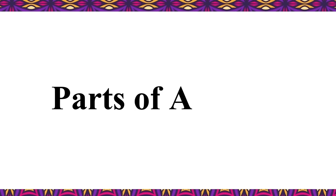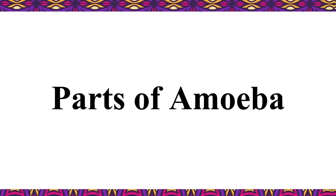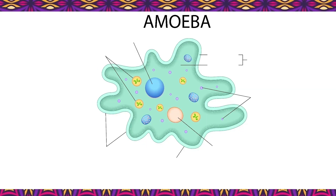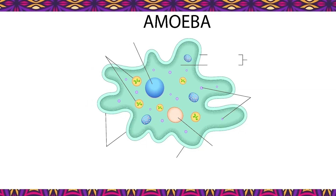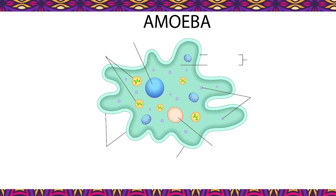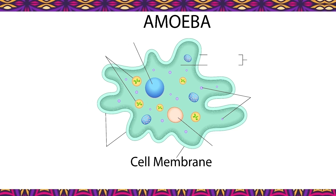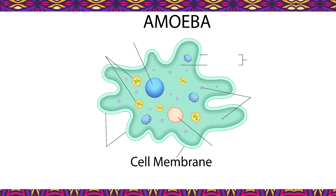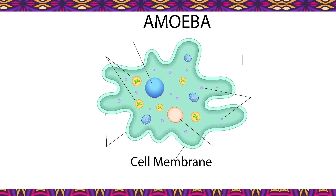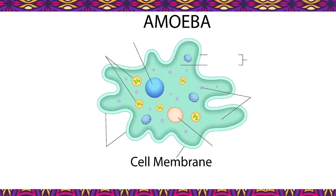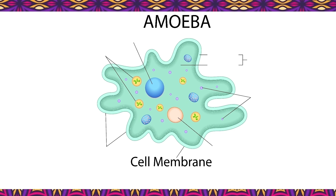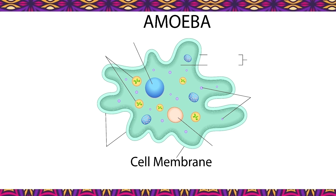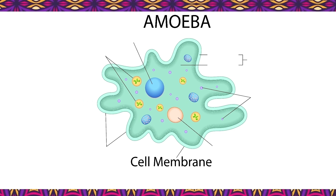Parts of amoeba. The cell of amoeba consists of the following parts. Cell membrane: this is a layer of protein and fat that surrounds the amoeba. It allows the flow of substances in and out of the cell.